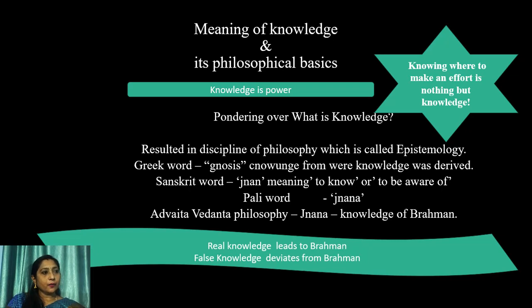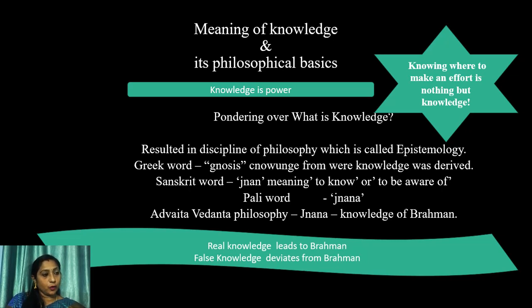Philosophers all over the world have pondered over the question 'what is knowledge?' for quite a long time. It has been discussed to such an extent that the product of this thinking resulted in a branch of philosophy called epistemology. Several questions related to the concept of knowledge have been dealt with under this subject, and the word knowledge has its roots in the Greek word gnosis. A word that uses the same root is 'recognized' — and we know what we recognize. We recognize, experience and being — it is in the realm of knowledge. There is another version which says the word comes from the earlier verb 'to know,' from which 'knowing' or the word 'knowledge' was derived.